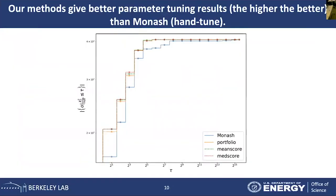This plot shows the results of our parameter tuning. The x-axis shows the error level and the y-axis shows the number of observations with chi-square values smaller than a certain error level — higher values indicate better performance. We compare our three methods with the Monash tune, which is the physicists' hand-tuned result. All three of our proposed methods perform better than the Monash tune.